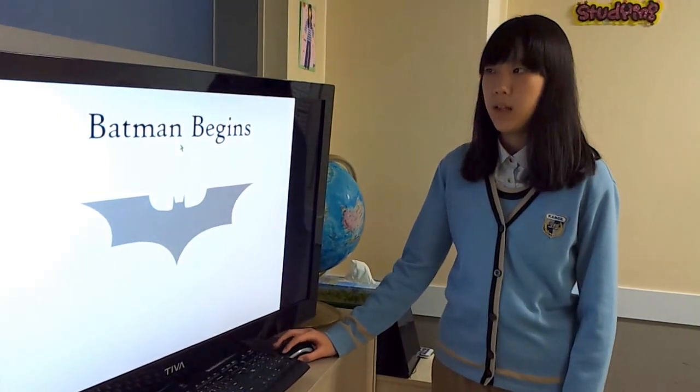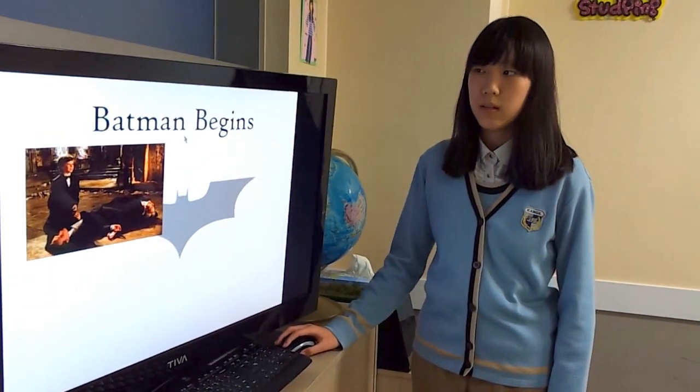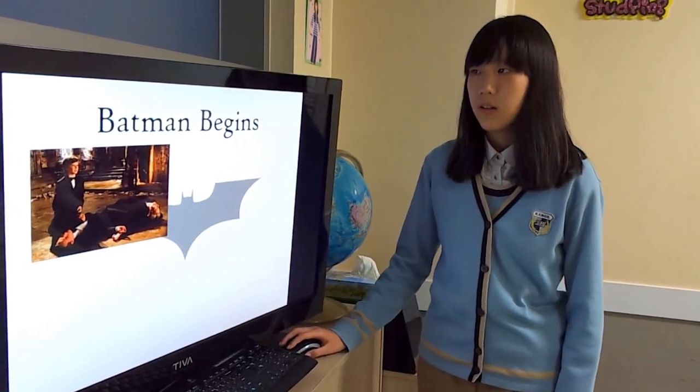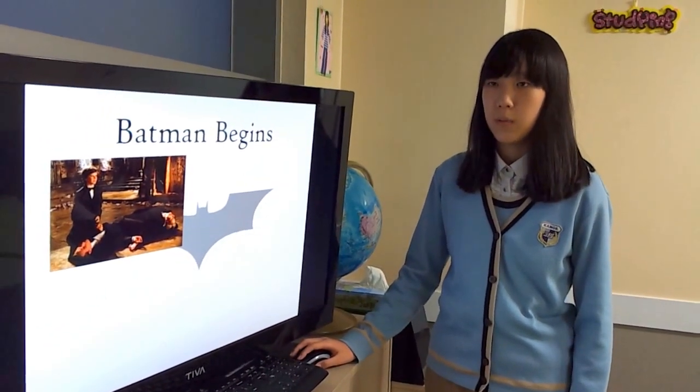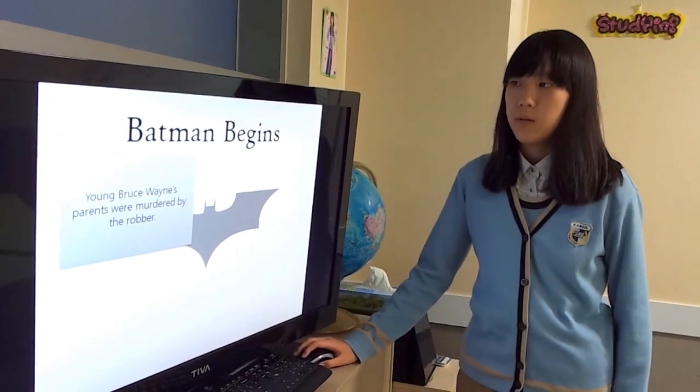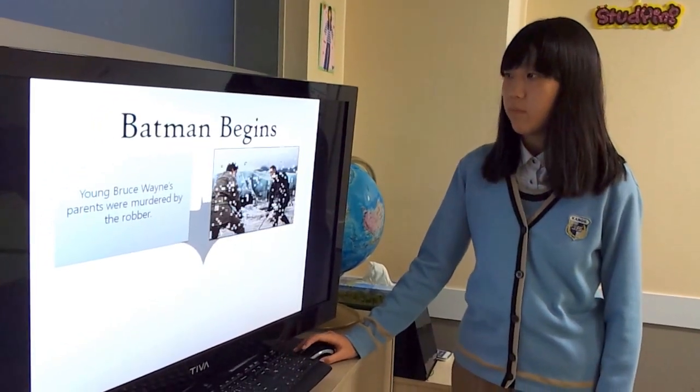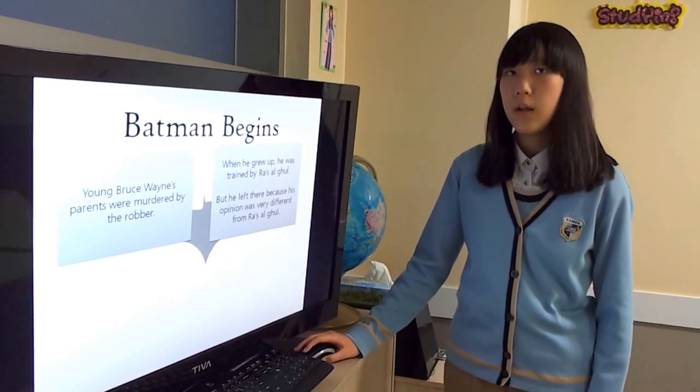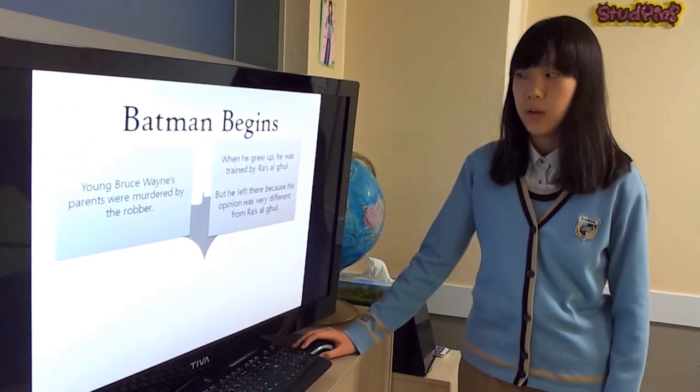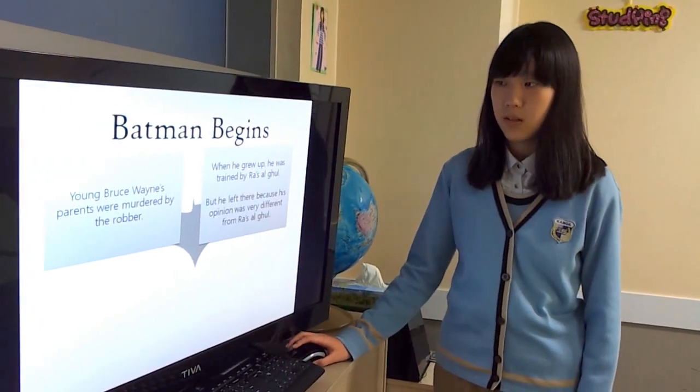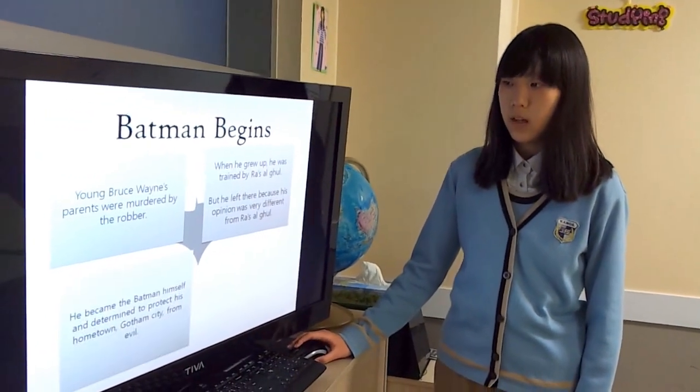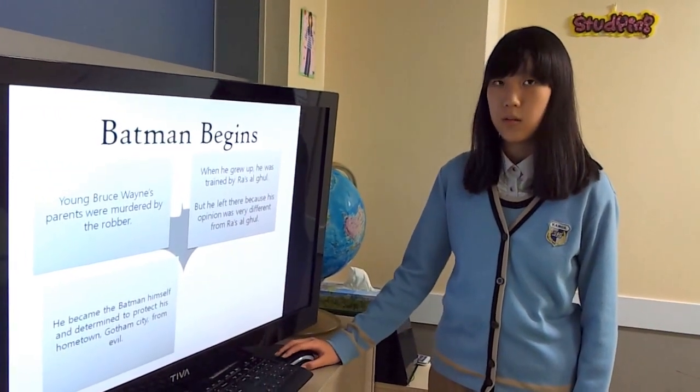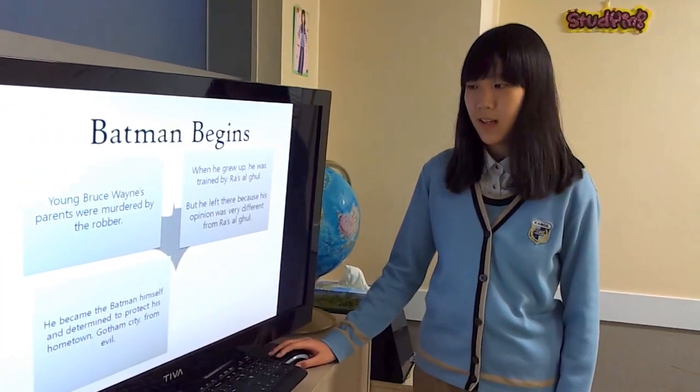Batman Begins: Young Bruce Wayne was born as the son of a rich man in Gotham City. His parents always tried to help the poor, but they were murdered by a robber. When he grew up, he was trained by Ra's al Ghul, but he left there because his opinion was very different. He became the Batman himself and determined to protect his hometown Gotham City from evil.